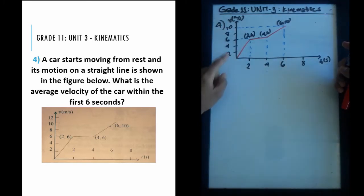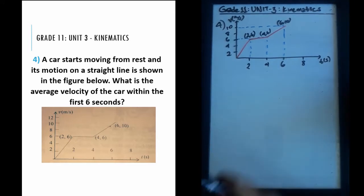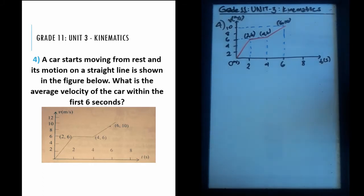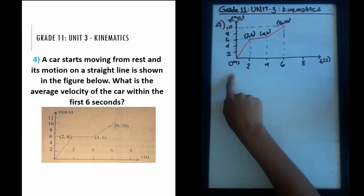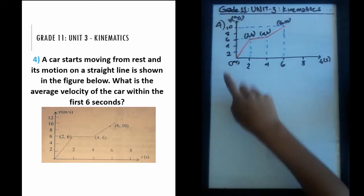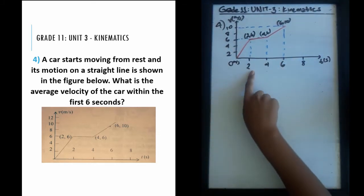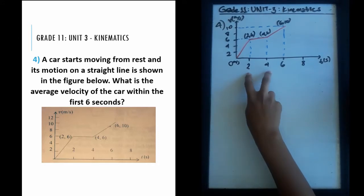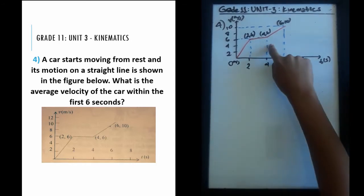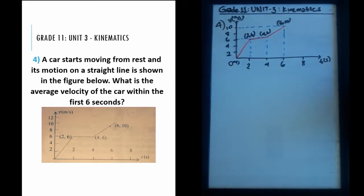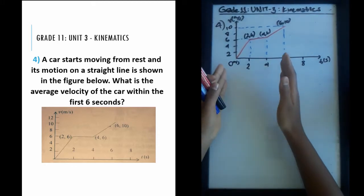The car starts at zero meters per second — it's not moving at all at first. Then it speeds up to six meters per second in the first two seconds. From two to four seconds, it stays constant at six meters per second. Then from four to six seconds, it speeds up again to ten meters per second. That's the path of the moving car in the first six seconds.